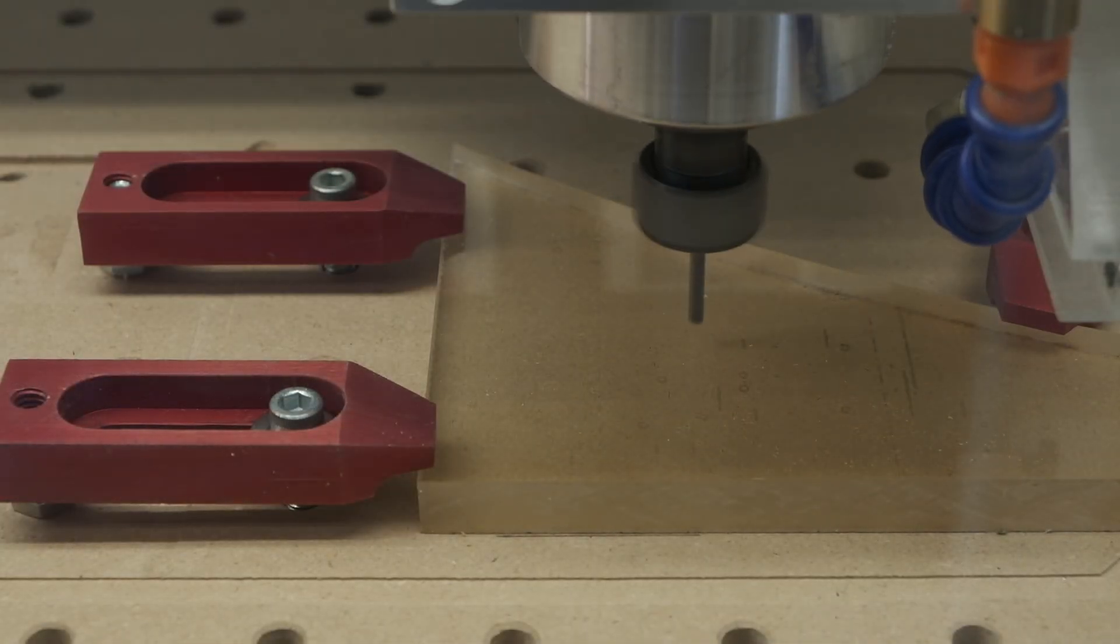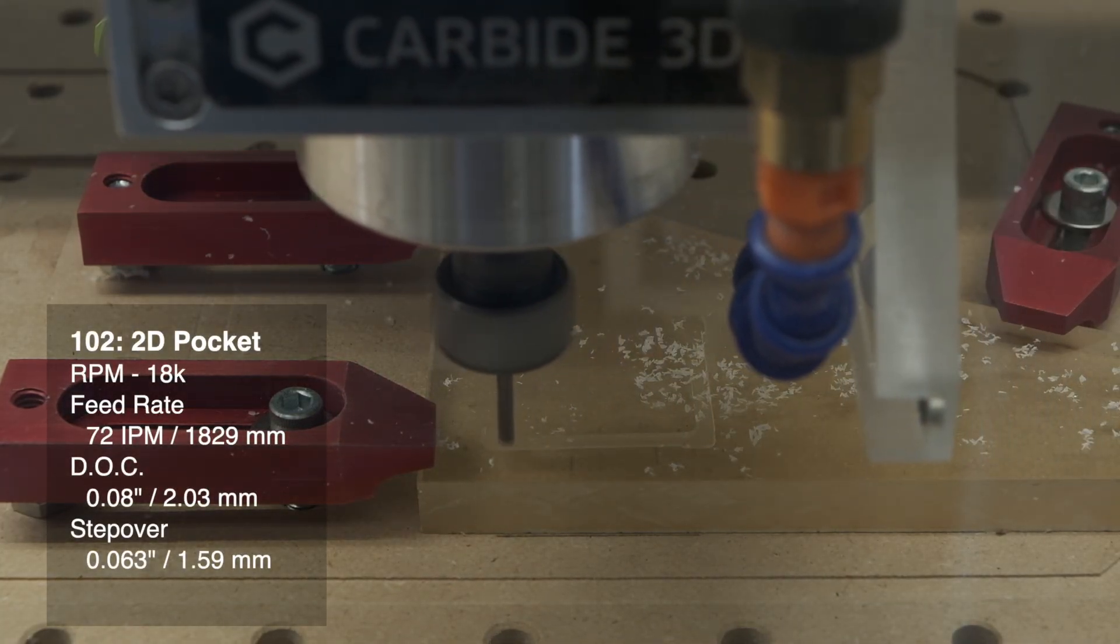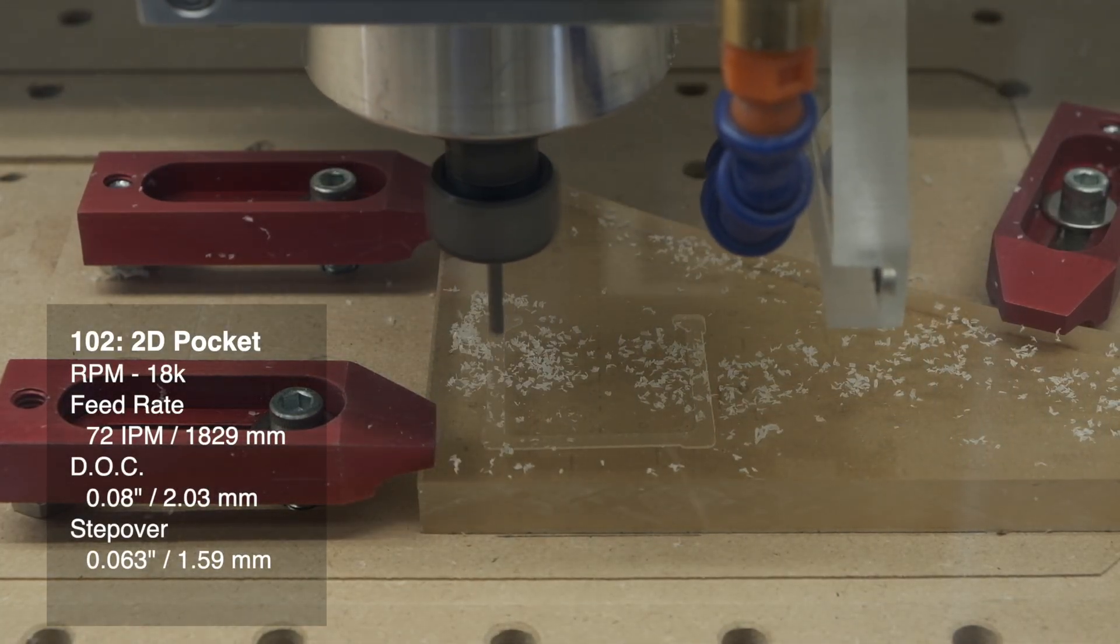Next up, with an eighth-inch end mill for pocketing, I would start at 18,000 RPM, 72 inches per minute, a 0.08 inch depth of cut, and a 50% step over.